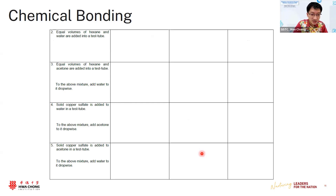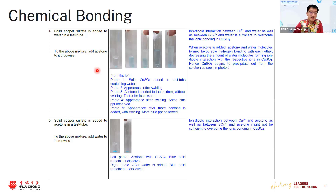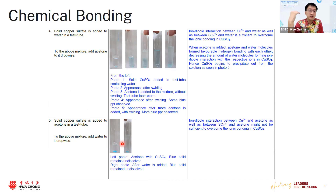The whole worksheet goes like this. Some parts are inherently more difficult than others. If you want to do it in a differentiated way, you can remove certain parts for some students. The more challenging part asks students to add copper sulfate to acetone, and then add water to see what happens — that's actually more challenging for students.